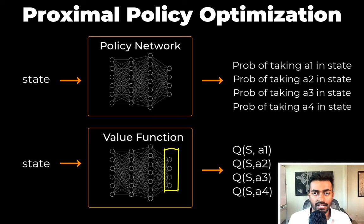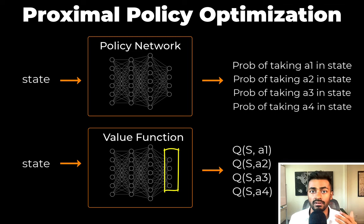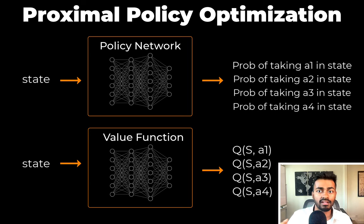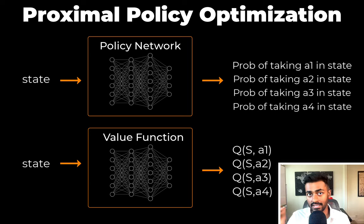From an architecture standpoint, similar to the policy network, the output layer of the value function network has a number of neurons equal to the number of possible actions. So technically, the value function neural network takes in a state as input and for every action determines a Q value, quantifying how good that specific output action was for that specific state.